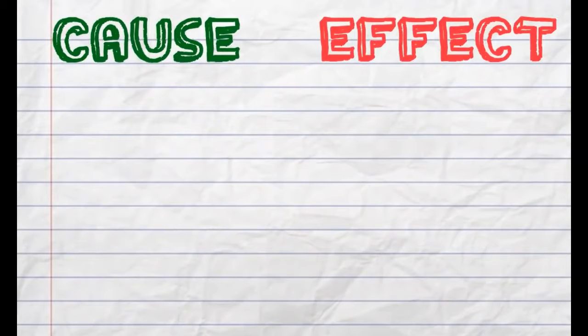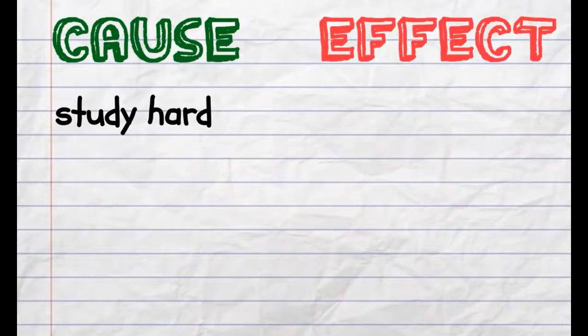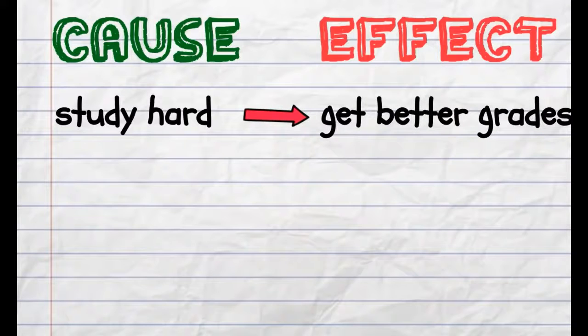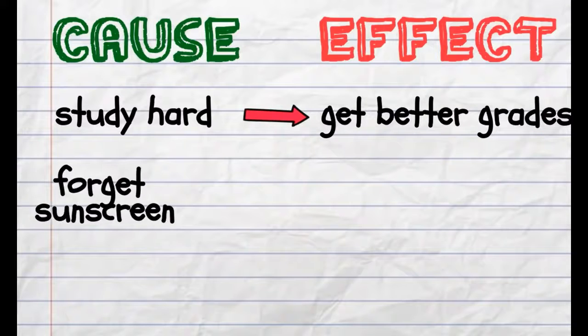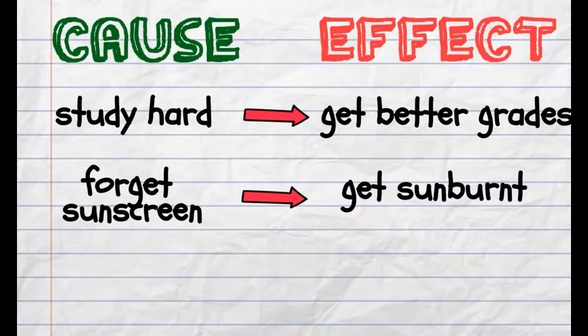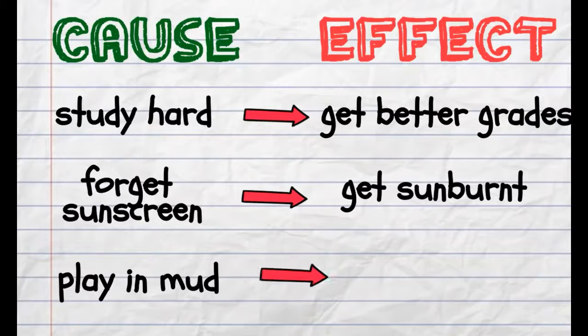Cause and effect relationships occur every day. For example, if you study hard, you'll get better grades. Forget to use sunscreen on a hot day, you'll get sunburnt. Play in the mud, get muddy.